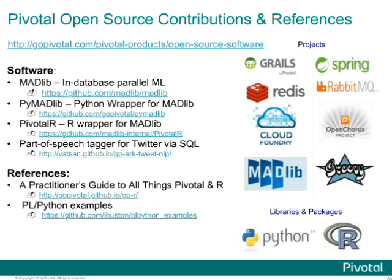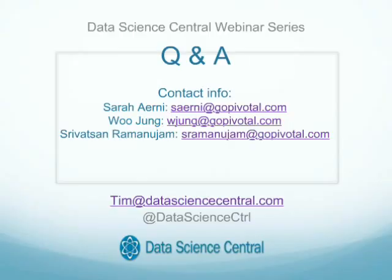Great presentation — really amazing detail. We are running a little short on time, so I want to make sure attendees can see the presenters' contact information on the current screen. First question: can you provide more details on parallelization in R with relevant examples? The best resource would be to follow our PLR and Pivotal R guide on GitHub — it has many examples showing how to parallelize a given task and verify parallelization works using three different approaches.